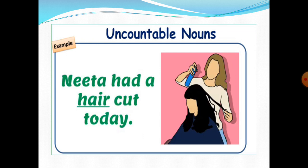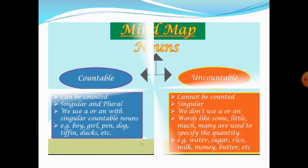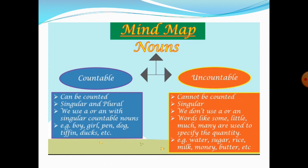Now let us quickly revise countable and uncountable nouns with the help of a mind map. Nouns can be classified as countable nouns and uncountable nouns. Countable nouns can be counted and can be singular or plural — that means one or many. We use a or an with singular countable nouns, for example, a pear, an apple. Examples of countable nouns include boy, girl, pen, dog, tiffin, ducks.